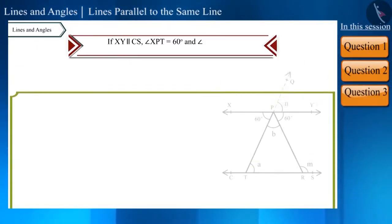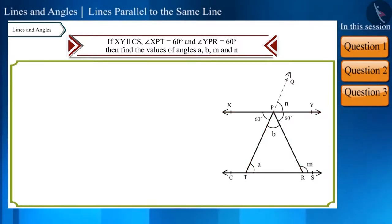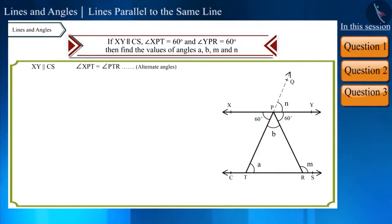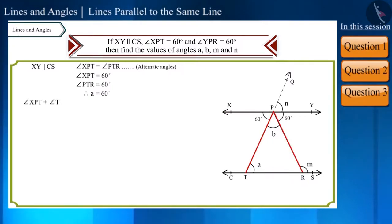Let's look at one more question. In the figure, if line XY and CS are parallel, angle XPT equals 60 degrees, and angle YPR equals 60 degrees, then find the measure of angles A, B, M, and N. Angle XPT and angle PTR are alternate angles, so both of them will be equal. Since the measure of angle XPT is 60 degrees, the measure of angle PTR — that is, angle A — will also be 60 degrees.